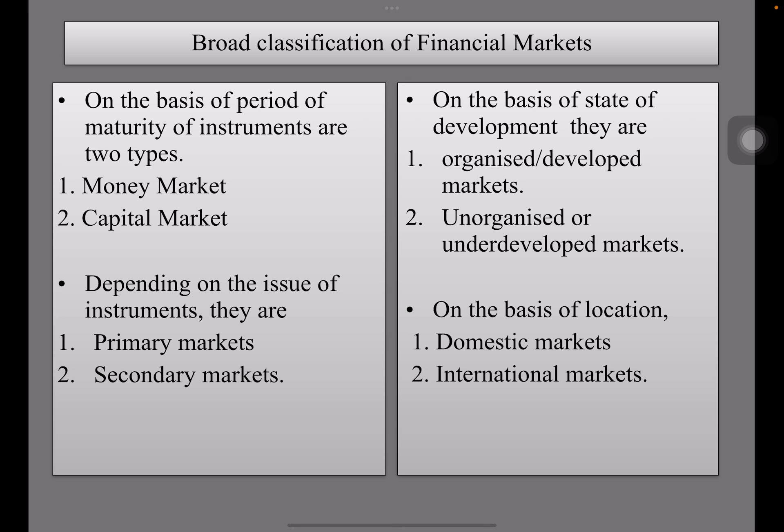Classification of financial markets: on the basis of period of maturity of the instrument with which the market deals, financial markets are two types — money market and capital market. Depending on the issue of instruments, they are primary market and secondary market. On the basis of state of development, they are organized or developed markets and unorganized or underdeveloped markets.